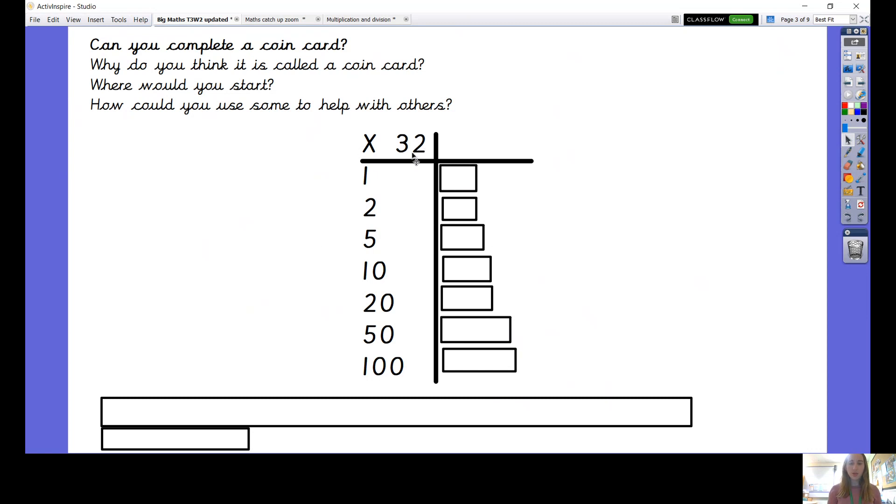When I'm doing a coin card I always start with the ones that I think are the most straightforward. So I know what 1 times 32 is, 1 times 32 is 32, and I can also now use my 1 times 32 to help me with some others. So 10 times 32 I can do because I know how to multiply it by 10, so 10 times 32 is 320, and then it's a very similar skill when I'm multiplying by 100, 32 multiplied by 100 is 3200.